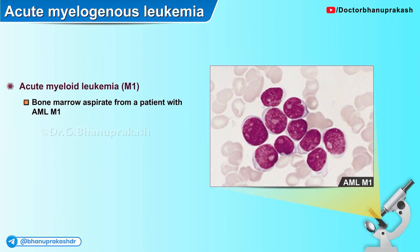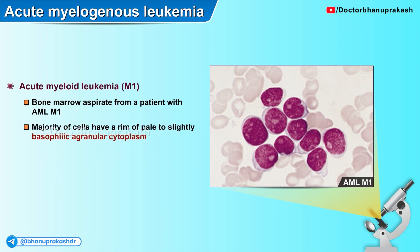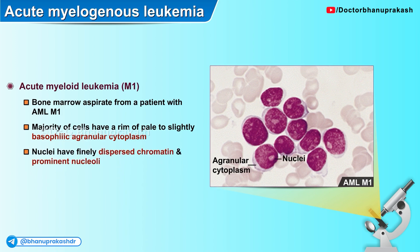Here is another bone marrow aspirate of a patient with AML. The majority of the cells have a rim of pale to slightly basophilic agranular cytoplasm, and the nuclei have finely dispersed chromatin with prominent nucleoli as well.